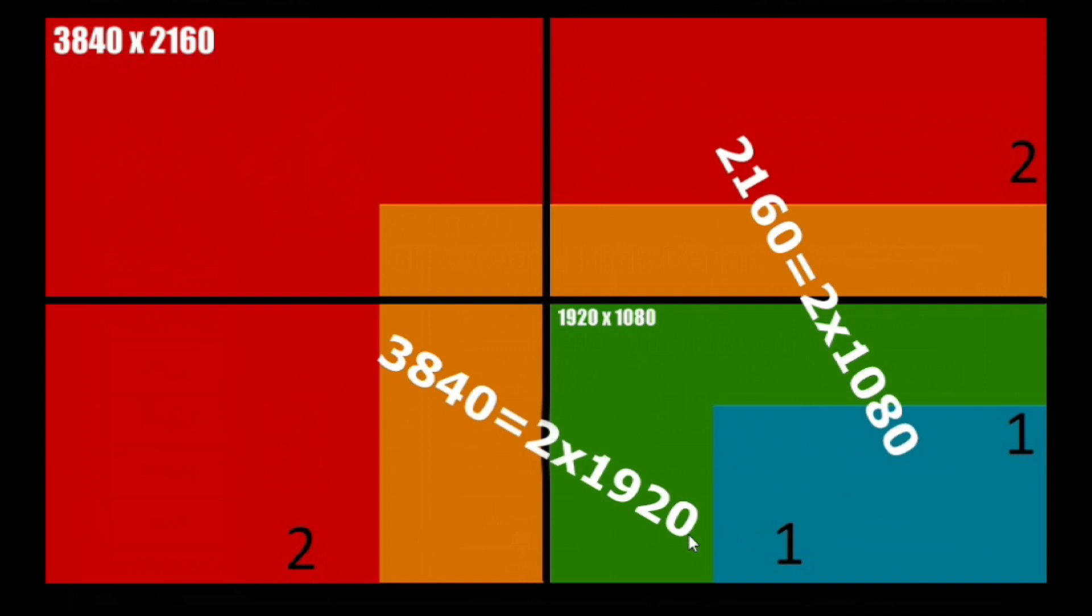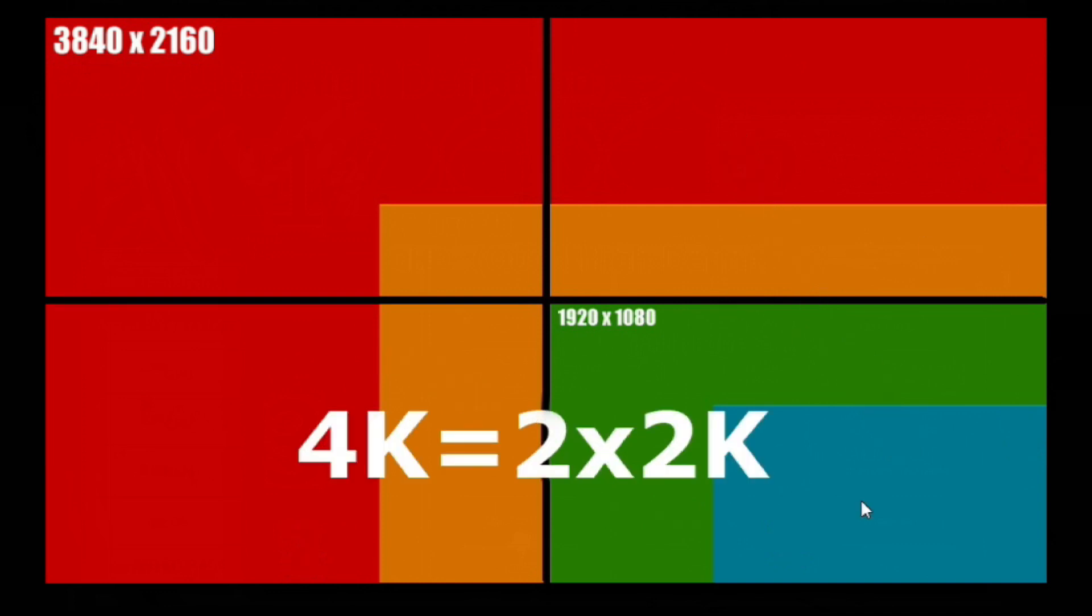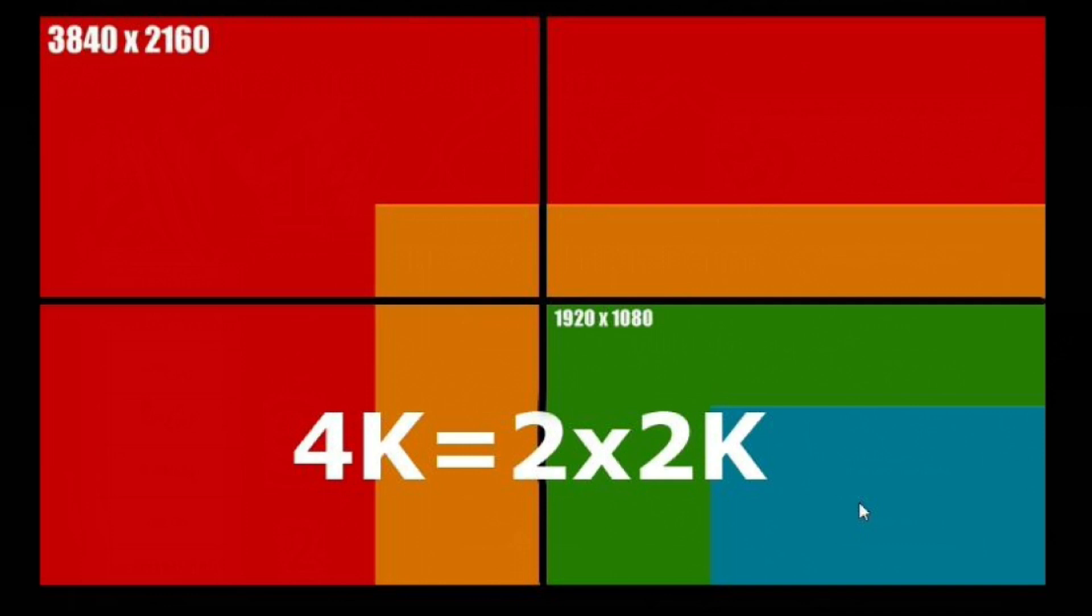You can do the math—it adds up. See, 1920 by 2 is 3840. Same thing here. From that, we can conclude that 4K is 2 times 2K, because two times the width of 1080p (2K) is 4K width, and two times the 1080p height (which is 2K) is the height of 4K.